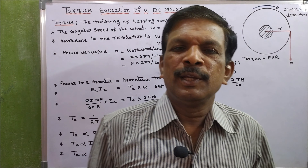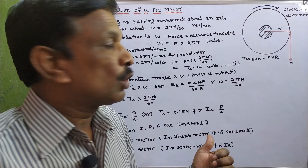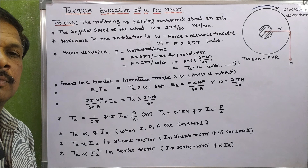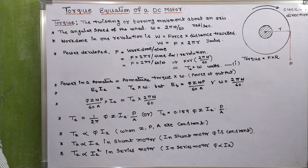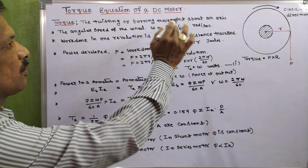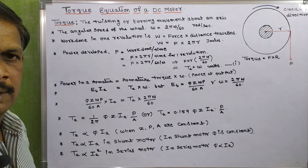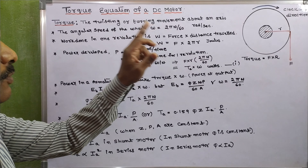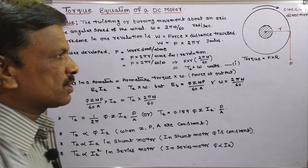Hi friends, in this video we are going to discuss about the torque equation of a DC motor. First of all, what is torque? A torque is a turning or thrusting movement about an axis.